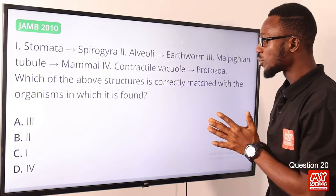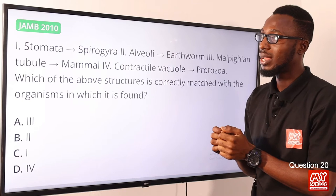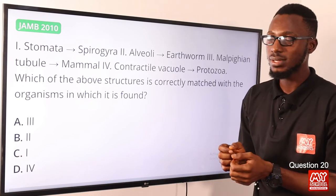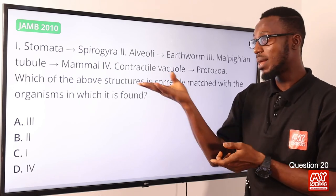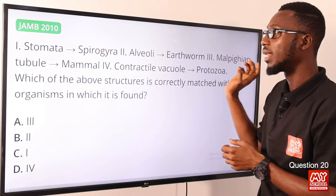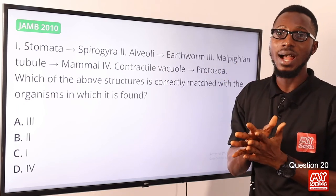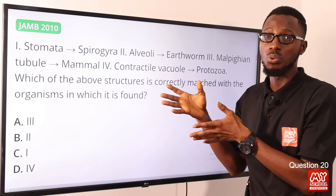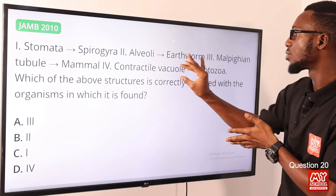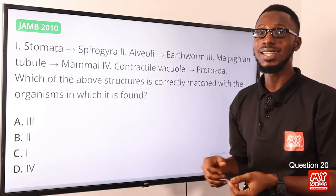Question 20: Which structure is correctly matched with the organism in which it is found? Stomata are found in plants. Alveoli are the air sacs for gaseous exchange in the lungs of mammals. Malpighian tubules are found in insects. The contractile vacuole is found in protozoa — for example, the amoeba uses the contractile vacuole to expel excess water. The correct match is option IV — contractile vacuole to protozoa — found in option D.